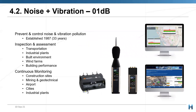For noise and vibration, we use the 01dB range of monitors, which is part of the ACOEM group. Based in France, they are very active and always pushing the envelope, getting bigger and better, and exploring new ways of making it easier for the user. These units can be used for inspection and assessments across transportation, industrial plants, building environments, wind farms and building performance. Or they can be used for continuous monitoring — set up on a tripod and left to monitor. They're small enough to be handheld, so if you need to measure something quickly, you can walk up to whatever's making the noise and take a reading right there.